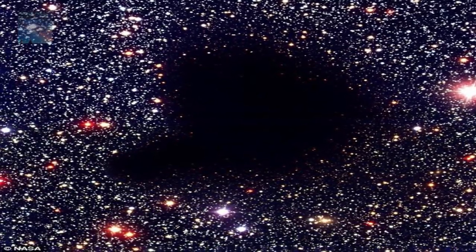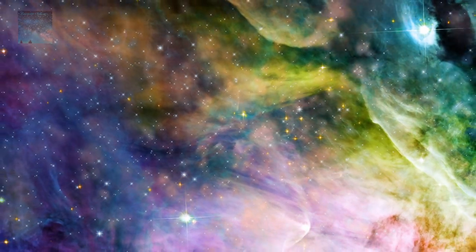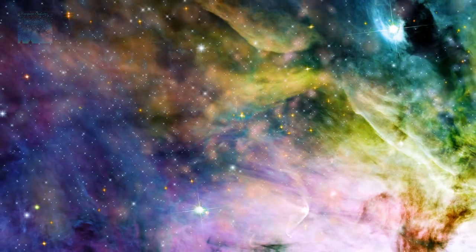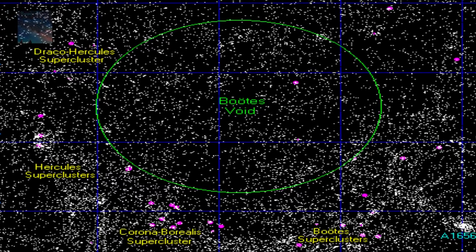The super void, or the giant nothing as we are calling it, is only about 3 billion light years away from Earth, a relatively short distance in the cosmic scheme of things. It is located in the Voidus constellation area of space.